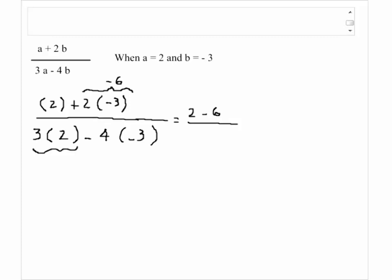And here I have 3 times 2 which is equal to 6. Here I have 4 times negative 3 which is equal to negative 12. So here I have 6 minus negative 12 is the same as 6 plus 12. We change the subtraction to addition and we write the opposite of negative 12 which is positive 12.